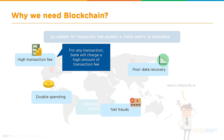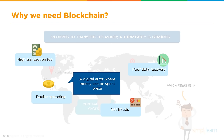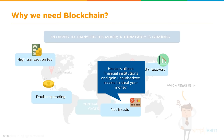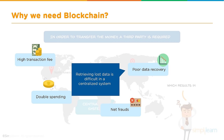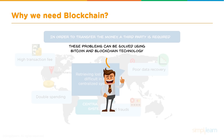High transaction fees: banks charge relatively very high fees compared to what cryptocurrencies charge today. Double spending is a digital error where money can be spent twice — for example, having $800 but spending $1,000. Hackers might attack financial institutions and gain unauthorized access to steal money. Poor data recovery: retrieving lost data is very difficult in a centralized system with only a single copy of information, whereas blockchain's distributed ledger makes recovery easy as information is distributed across multiple nodes.